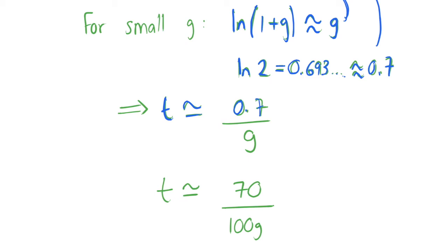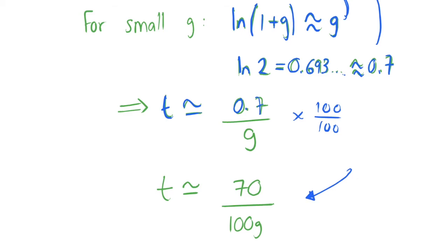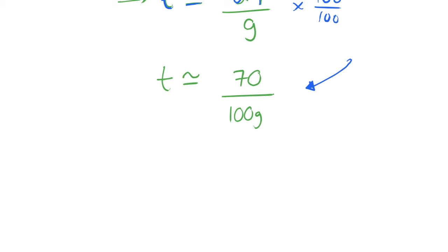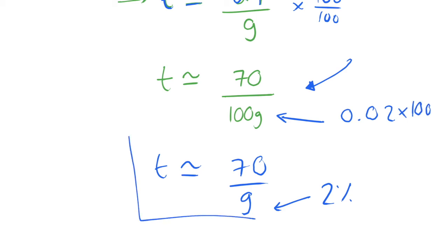By just multiplying top and bottom by 100, we're going to see that our t is roughly equal to 70 over 100 multiplied by g. So this is our rule of 70: the time at which something doubles is going to be equal to 70 over g. Notice that this g we're looking at is 2%, whereas the g we used here was 0.02.